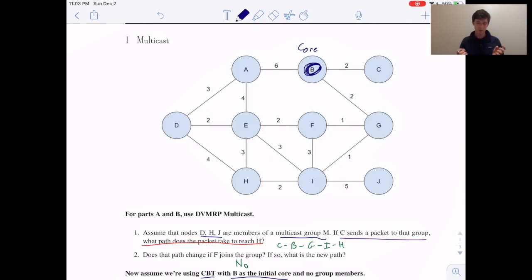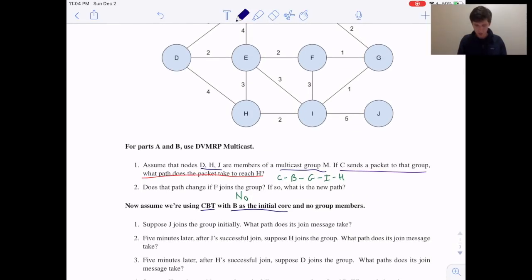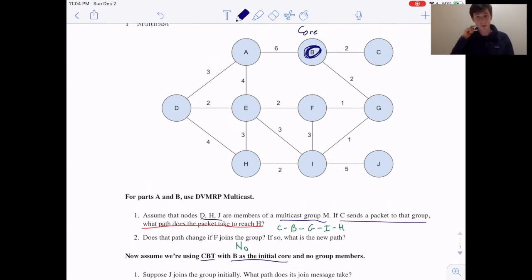And along the way, routers mark themselves and the link that that message came in on as part of the tree. And this join message goes until it hits some router that's a member of the tree. Because our end goal is to build a tree that spans all of our group members. And so as soon as a join message hits a node that's already part of that tree, then just those new links that have been added up until there are what's needed. Everything else, the rest of the path is the same and is already part of the tree.